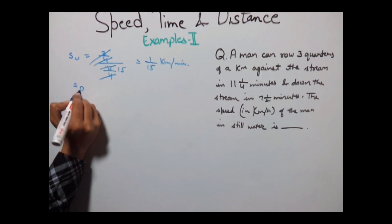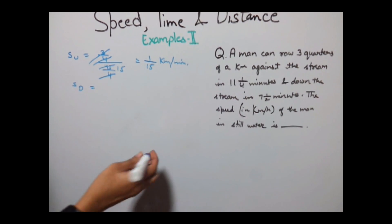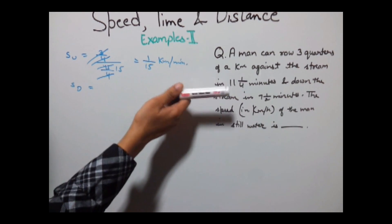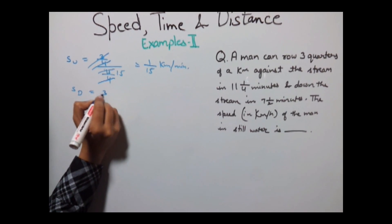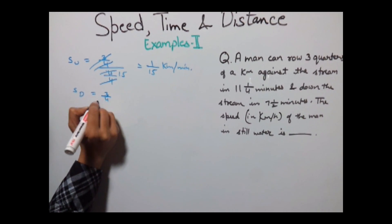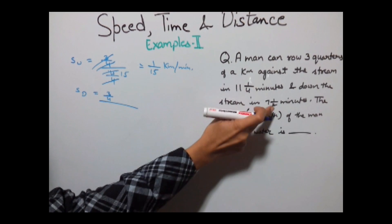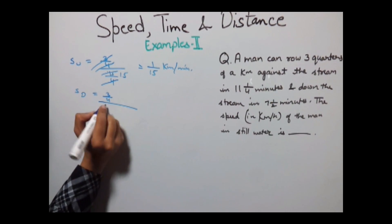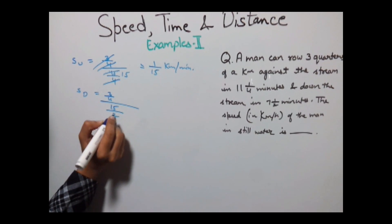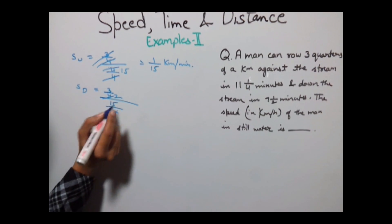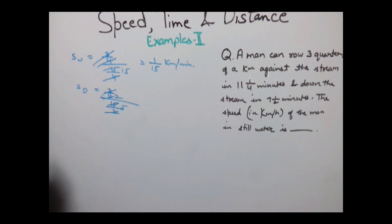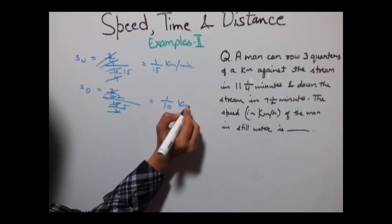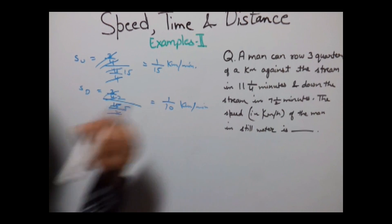Similarly, speed of downstream equals (3/4) divided by (15/2), which equals (3/4) times (2/15) equals 1/10 kilometer per minute.